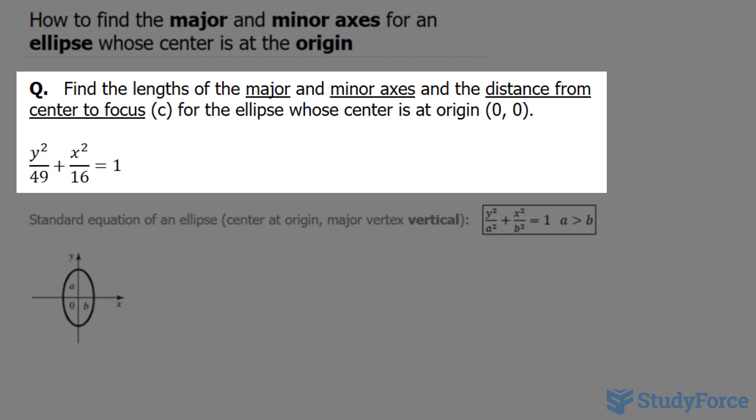The question reads, find the lengths of the major and minor axes and the distance from the center to focus c for the ellipse whose center is at the origin (0, 0).